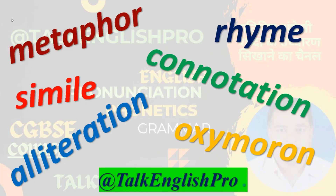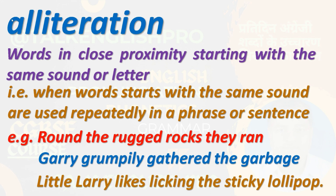Welcome again to my YouTube classroom Talk English Pro. Subscribe to this channel. Today we'll learn about metaphor, rhymes, connotation, simile, alliteration, and oxymorons. First, let's see alliteration — words in close proximity starting with the same sound or letter.